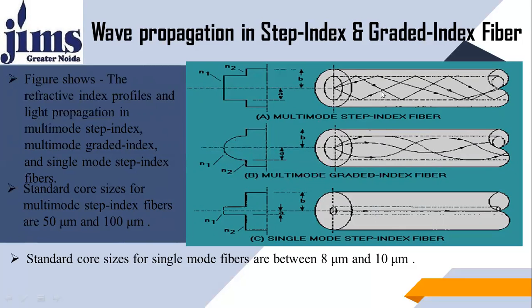In single-mode step index fiber, the core region has the same uniform refractive index. The core diameter is very small compared to multi-mode. Standard core size for single mode fiber is between 8 and 10 micrometers, while for multi-mode it is 50 to 100 micrometers. These three figures together show the propagation of a light signal inside different types of optical fibers.